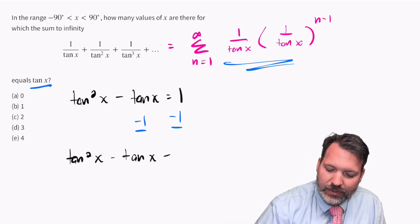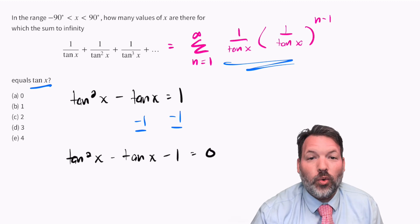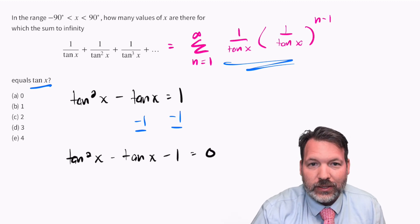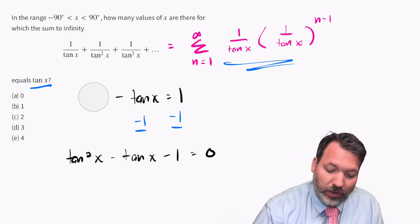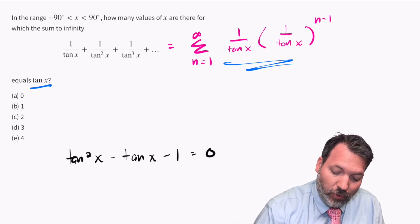Subtracting one from both sides gives us something that is a quadratic, but a quadratic not in terms of x, but in terms of tangent x instead. Because it's quadratic, we're going to go ahead and use the quadratic formula to solve it.